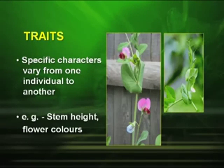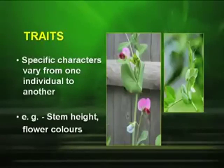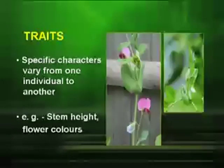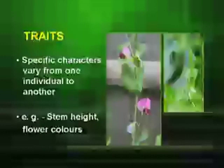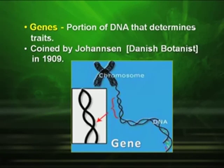For example, let us take the example of a plant. A tall plant and a short plant, or flower colors — maybe red or white. So, different characters that we study in genetics are called traits. Now, what are genes? Genes are the portion of DNA that determines characters. The term was coined by Johanssen, a Danish botanist, in 1909.